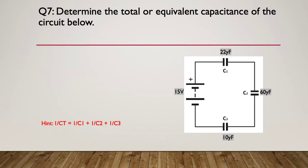The hint is, the capacitance in series is one on CT is equal to one on C1 plus one on C2 plus one on C3.